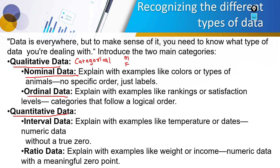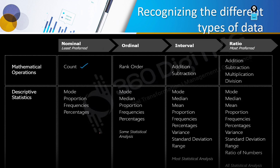In nominal data, order cannot be established, so we use nominal data. Where we require order, we use ordinal data. The example from the last class: student marks — some have distinction, some first class, some second class, some pass, some backlogs, and some are failed. That is ordinal data. In quantitative data, we have interval data (example: temperature) and ratio data (example: income or rupees).